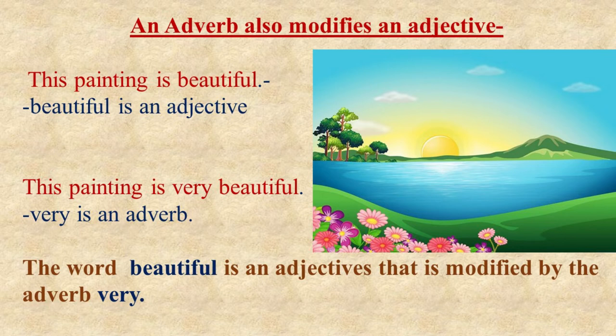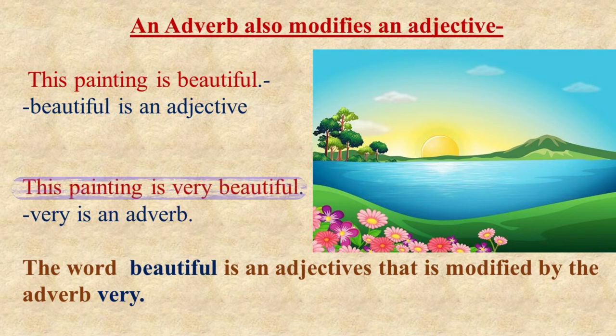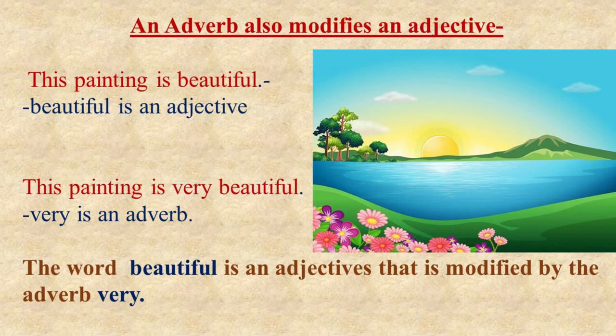Now, please read the next sentence. This painting is very beautiful. We can observe that this sentence is a bit modified. Here, the word 'very' is describing the word 'beautiful.' It is telling us the degree of beauty, or to what extent the painting is beautiful. So, the word 'very' is an adverb which is modifying the adjective 'beautiful.'